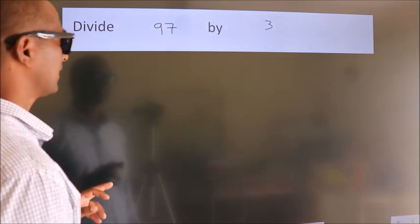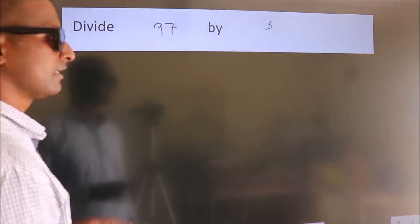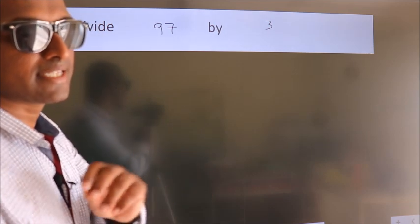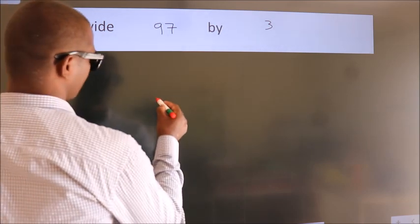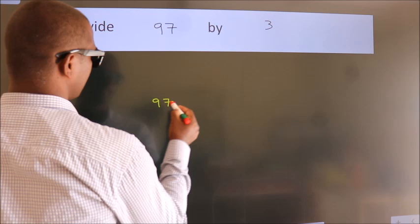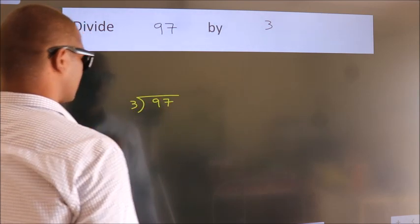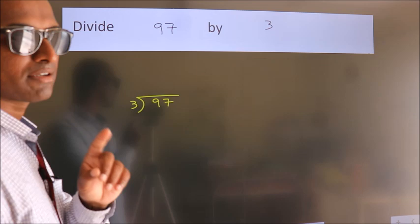Divide 97 by 3. To do this division, we should frame it in this way. 97 here, 3 here. This is your step 1.